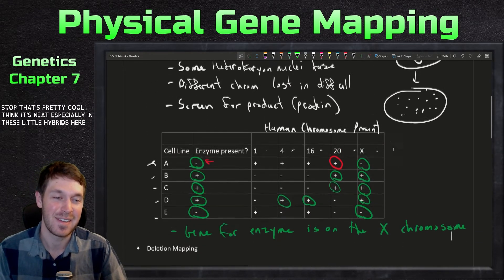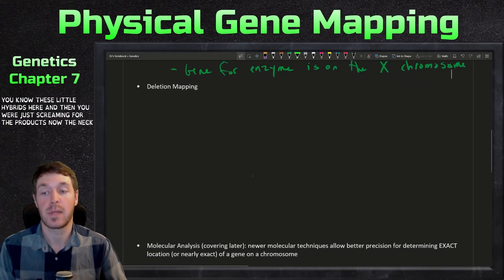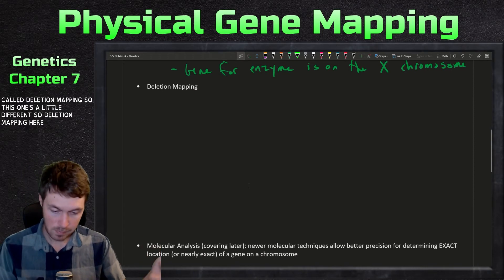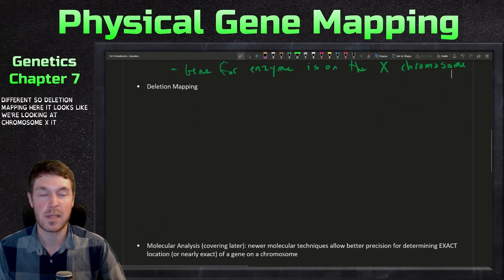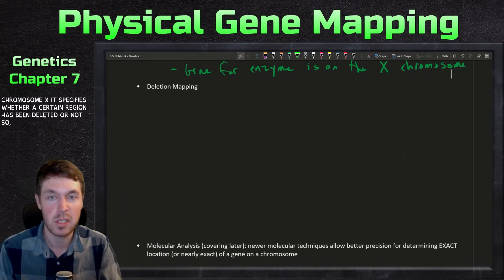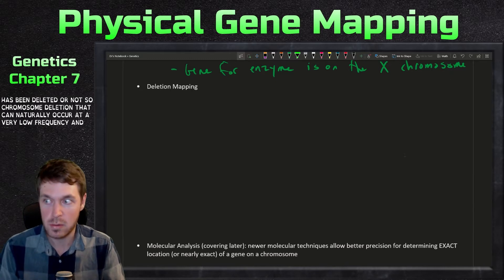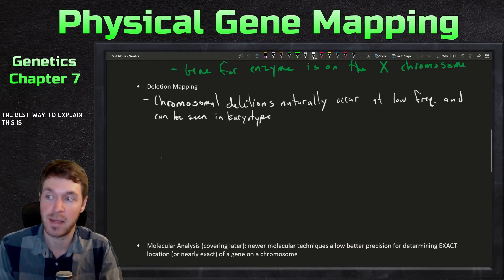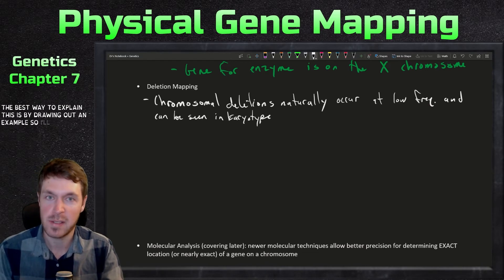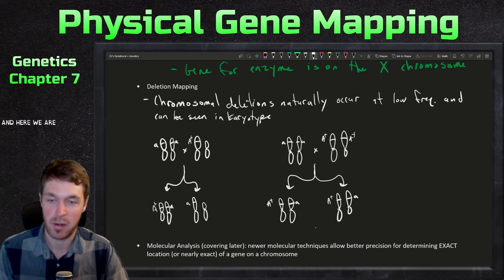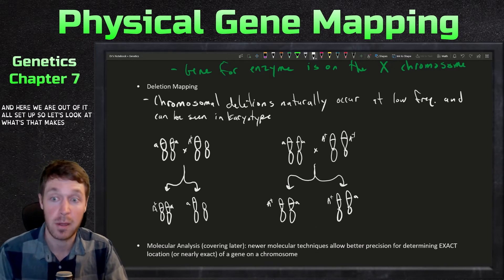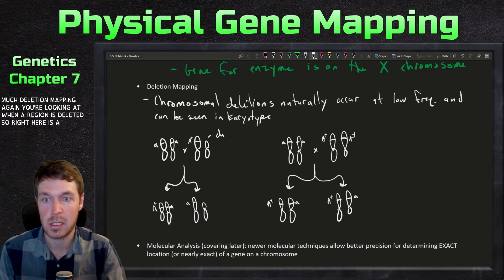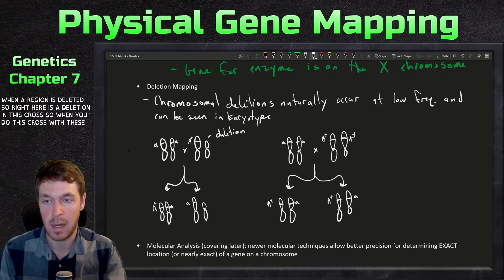The next technique is deletion mapping, which is a little different. Deletion mapping specifies whether a certain chromosomal region has been deleted or not. Chromosome deletions can naturally occur at a very low frequency and can be seen in a karyotype. The best way to explain this is with a drawn example.